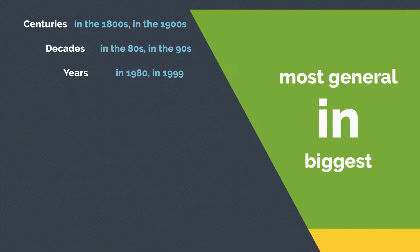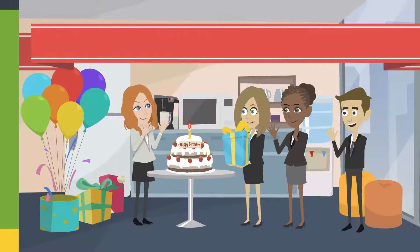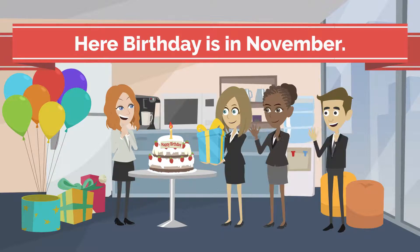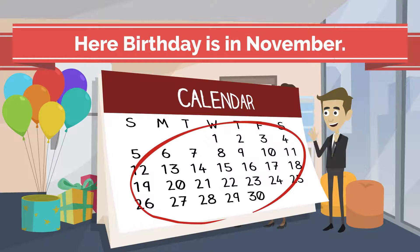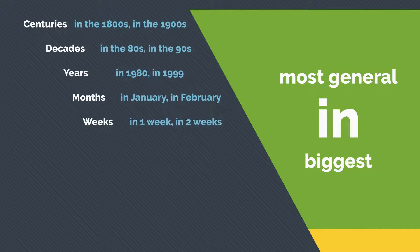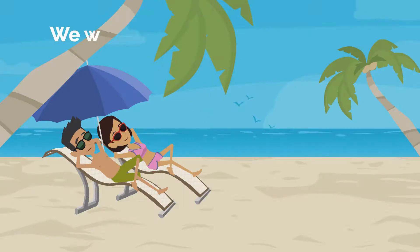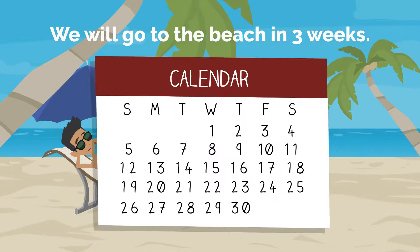In can be used with months, such as in January, in February, etc. For example, her birthday is in November. This is not very specific, as we don't know the exact day in November. It can also be used with weeks, such as in one week, in two weeks, etc. For example, we will go to the beach in three weeks. This is not very specific, as we don't know the exact day — is it a Monday, Tuesday, Wednesday, etc.? It is not clear.